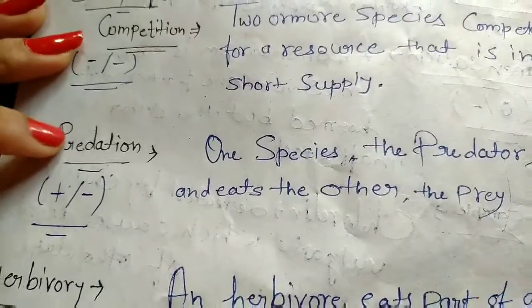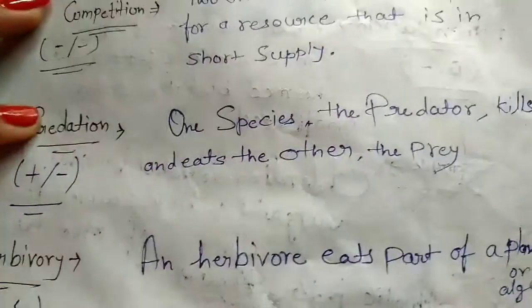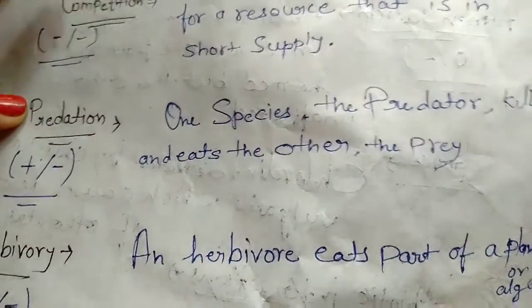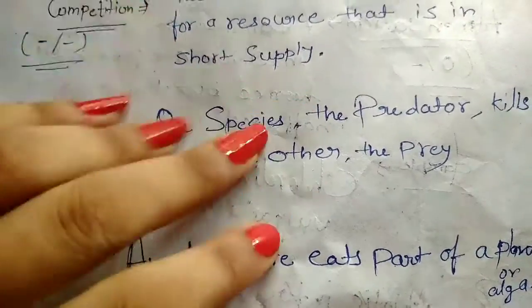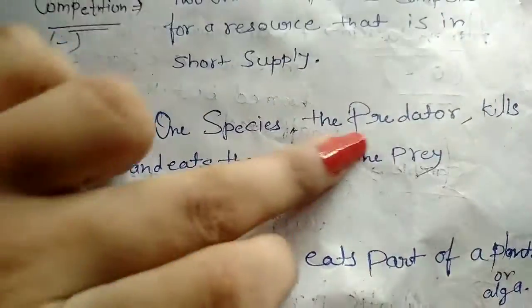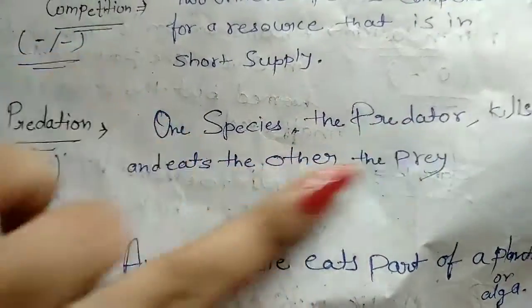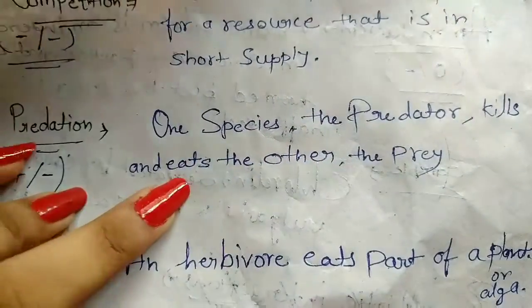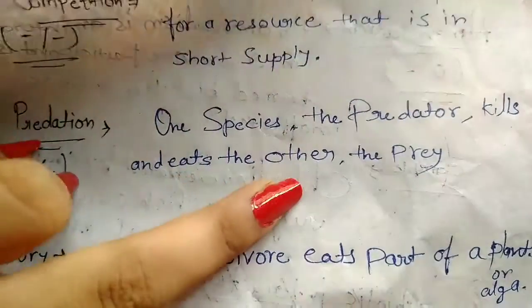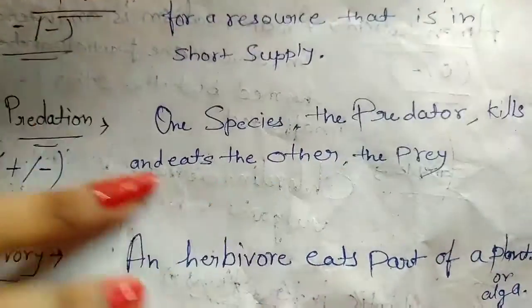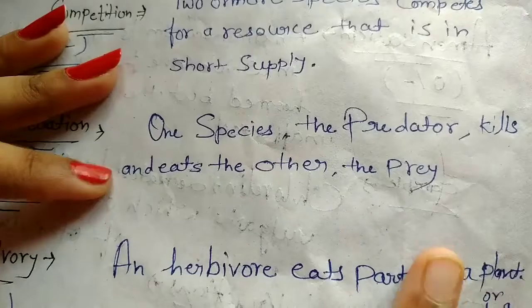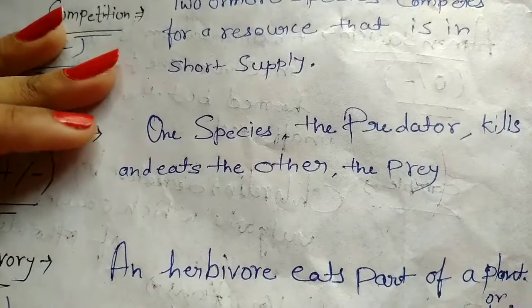Next, we are discussing predation. In predation, one species — the predator — kills another species, its prey. The prey is also called the host in some contexts.